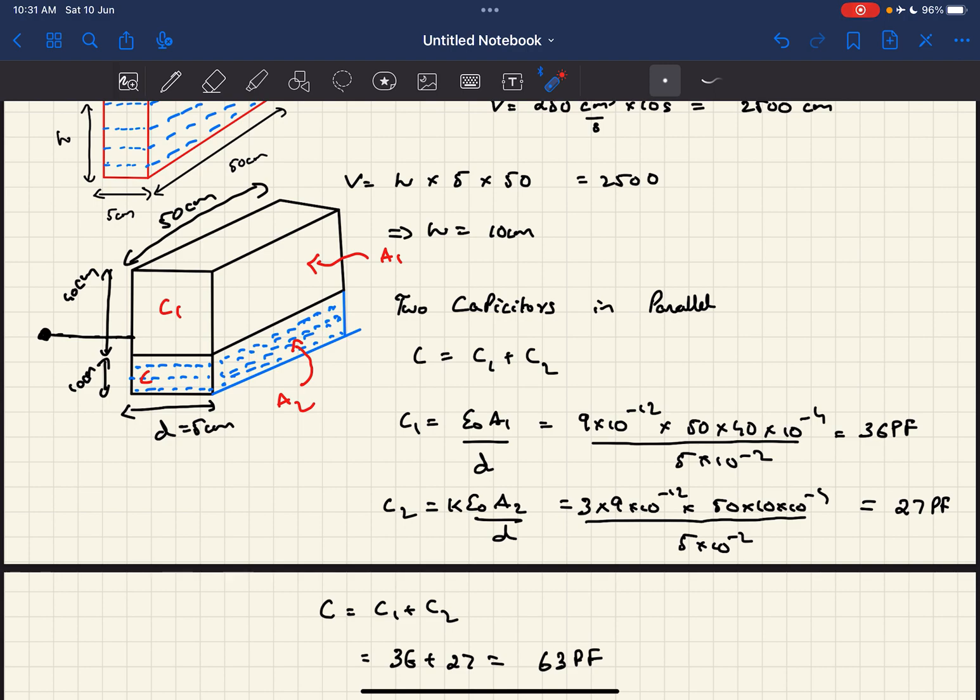C1 would be simply an air capacitor, so it will be epsilon 0 A1 by d, where A1 is this cross-sectional area. That would be 50 times 40, and we need to convert that into meters.